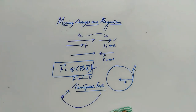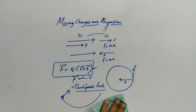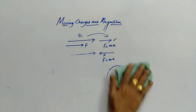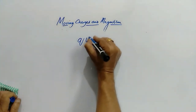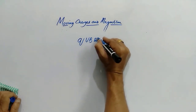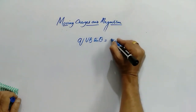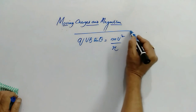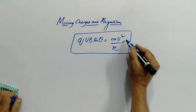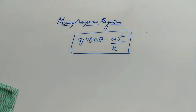Now, if any charged particle is projected at an angle theta with initial velocity V and moves in a circular path, what should be the radius of that path? It is straightforward: qvB sinθ provides the centripetal force, and on the right side we have the centripetal force formula mv²/r.